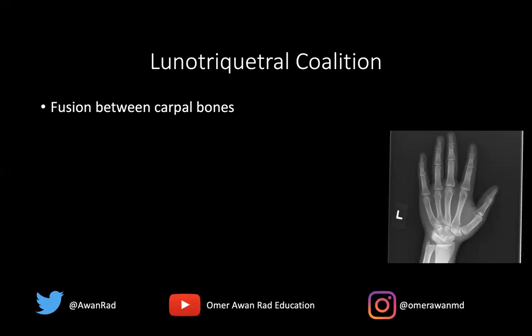We often talk about tarsal coalitions in the ankle — the two most common are the talocalcaneal and the calcaneonavicular, seen in roughly equal preponderance. But in the wrist, by far the most common coalition is a lunotriquetral coalition, between the lunate and the triquetrum.